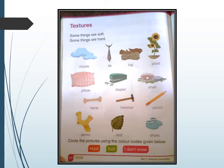This is your science book, page number 20. The topic is texture. Some things are soft, as I already told you, and some things are hard. Circle the pictures using the color codes given below. Hard objects are red color, soft objects are green.